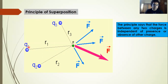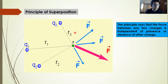Suppose we have charges Q1, Q2, and Q3. Q1 is at a distance R1 and Q2 is at a distance R2 from point P. Because of Q2, a force acts upward at P, and because of Q1, a force acts below. Because of Q3, the force also acts upward. So because of these three charges, individual forces act at point P. The principle of superposition says these forces due to individual charges are not affected by the presence or absence of the other charges.